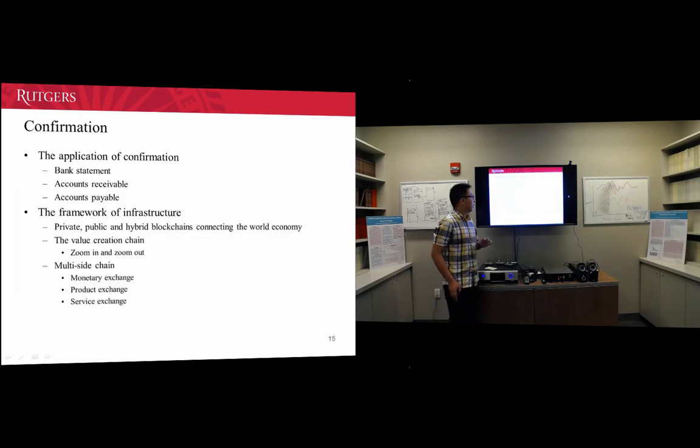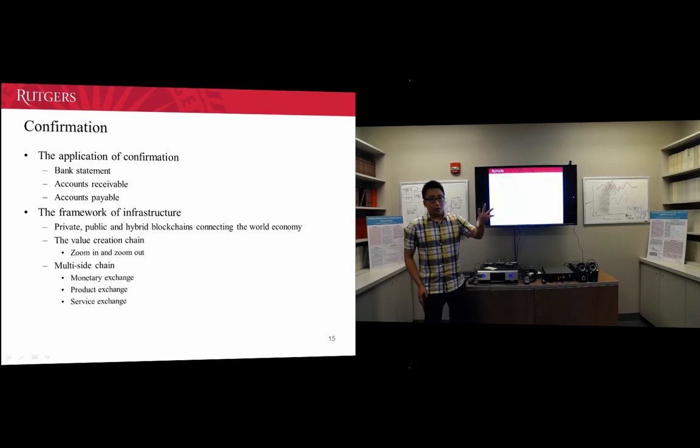For confirmation and automatic confirmation applications, if we design our blockchain technology properly and use this infrastructure to detect fraud, we can use private, public, or hybrid blockchain to connect the world economy. In the value creation chain, we zoom in and zoom out to find every transaction.